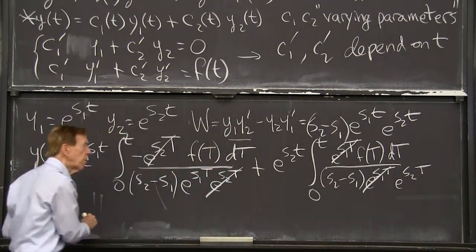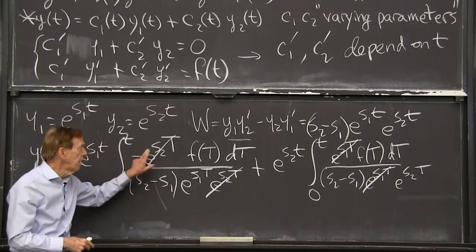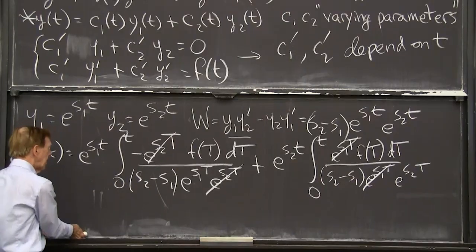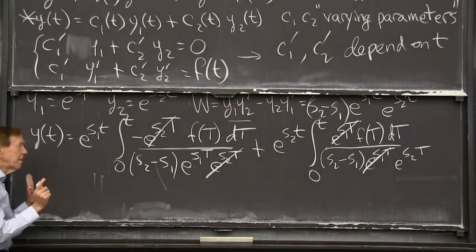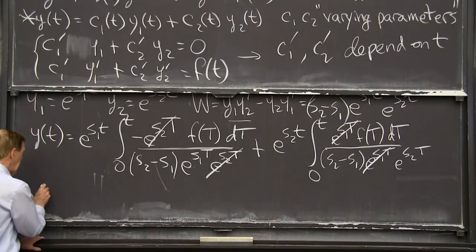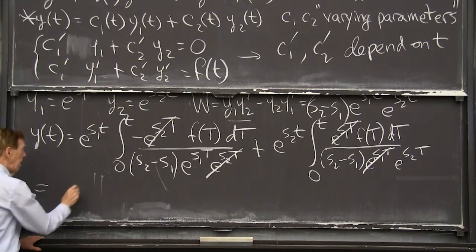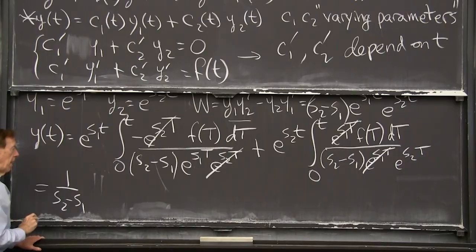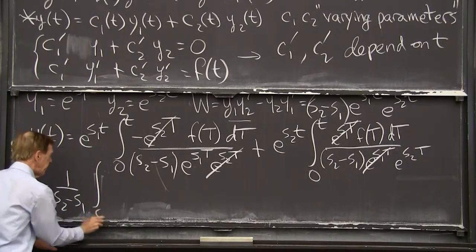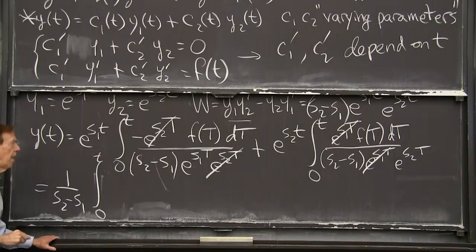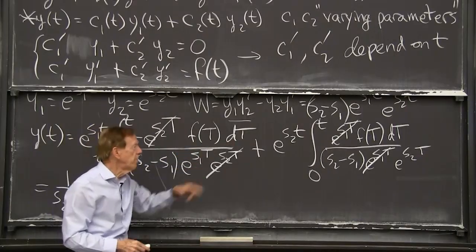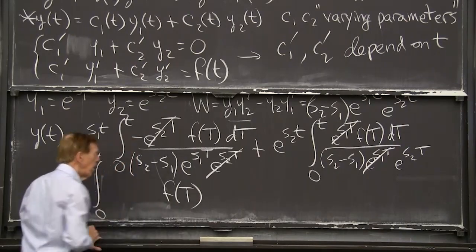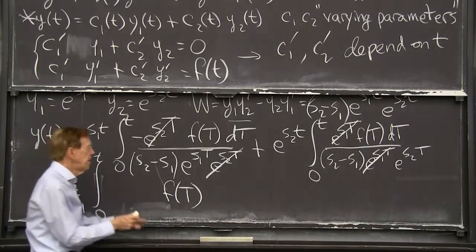It doesn't get better than this. And in fact, I guess I can cancel e to the s2 t's there. I can cancel the e to the s1 t's there. I can put this up with a minus exponent. Oh yeah, it's going to be good. It's going to be good. So here is a constant s2 minus s1. The same for both terms. Then I'll put this up here as a negative exponent. So there's an e to the s1 t, I'll get, you might see this coming. I get this 1 over s2 minus s1. And then I have the integral. And here I have an f of t in both integrals. So let me just put that f of t down. And I have a dt.